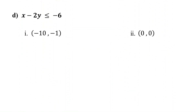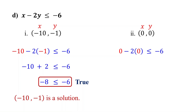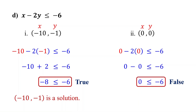Try the last example with a less than or equal to inequality. For the ordered pair (−10, −1), substitute negative 10 for x and negative 1 for y, then simplify. This is true because negative 8 is less than negative 6, which satisfies the less than or equal to condition. So (−10, −1) is a solution. For the ordered pair (0, 0), substitute 0 for both x and y, then simplify. This is false because 0 is not less than or equal to negative 6. So the ordered pair (0, 0) is not a solution to the inequality.